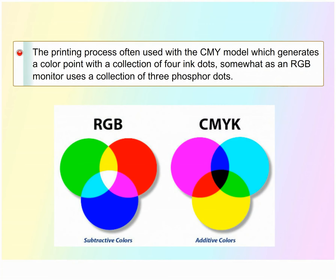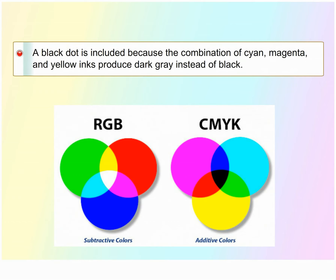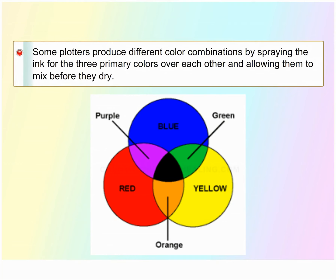The printing process often used with the CMY model generates a color point with a collection of four ink dots, somewhat as an RGB monitor uses a collection of three phosphor dots. One dot is used for each of the primary colors — cyan, magenta, and yellow — and one dot is black. A black dot is included because a combination of cyan, magenta, and yellow inks typically produces dark gray instead of black.